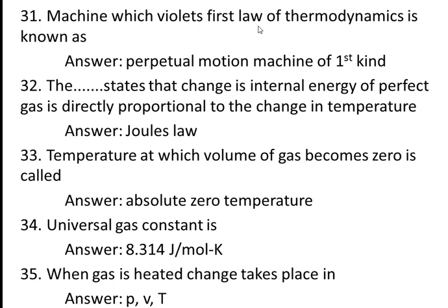Thirty-first question: a machine which violates the first law of thermodynamics is known as a perpetual motion machine of the first kind, also called PMM1. A machine which violates the second law of thermodynamics is known as PMM2.